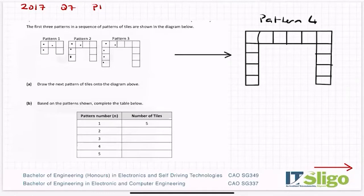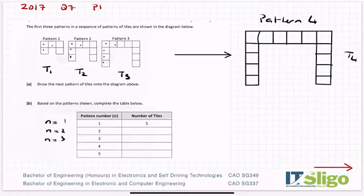Part B: based on the patterns above, complete the table below. So pattern number — this is our T1 first term, T2, T3, T4 — this is how we often refer to our terms in a sequence. Our n is equal to 1, n is equal to 2, 3, 4 and we have to project it to the fifth.